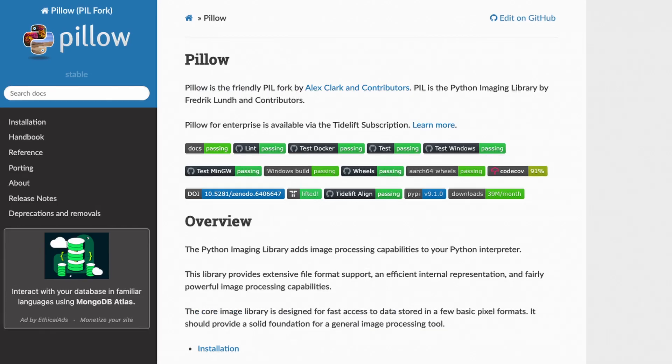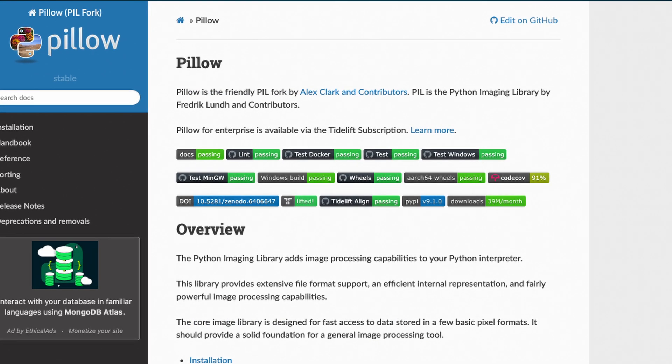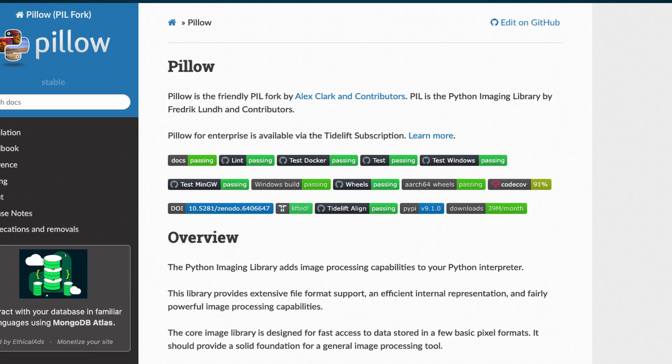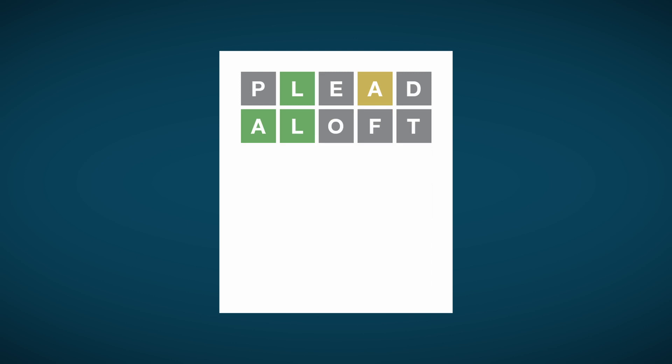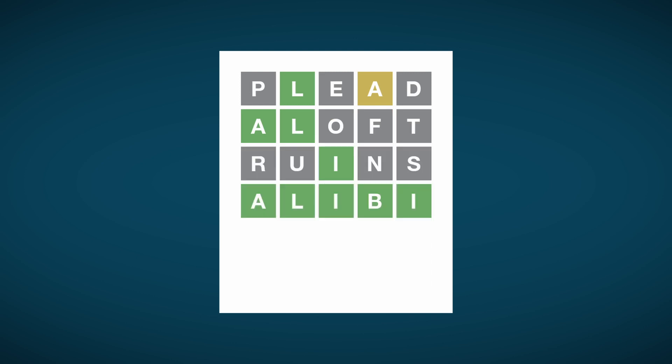To do this, I found a Python imaging library. Using this library, I create a blank image and draw a colored square for each letter, writing the letter on the square. It does the same for all of the guesses and draws blank squares at the end for the remaining unused guesses.